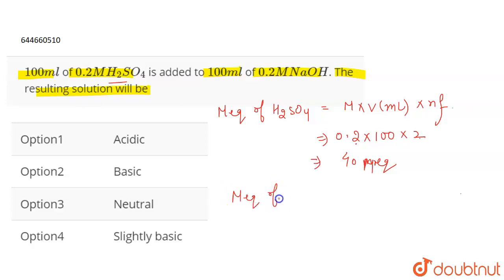If we talk about the milliequivalence of NaOH, that will be molarity times volume times n-factor. N-factor is 1 because it gives only 1 OH-. So this will be 20 milliequivalence.